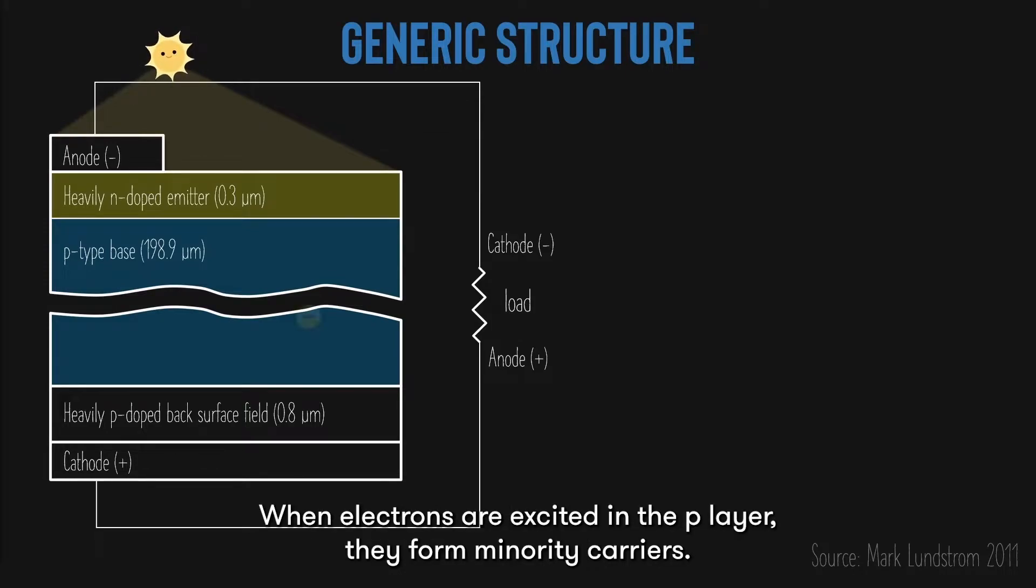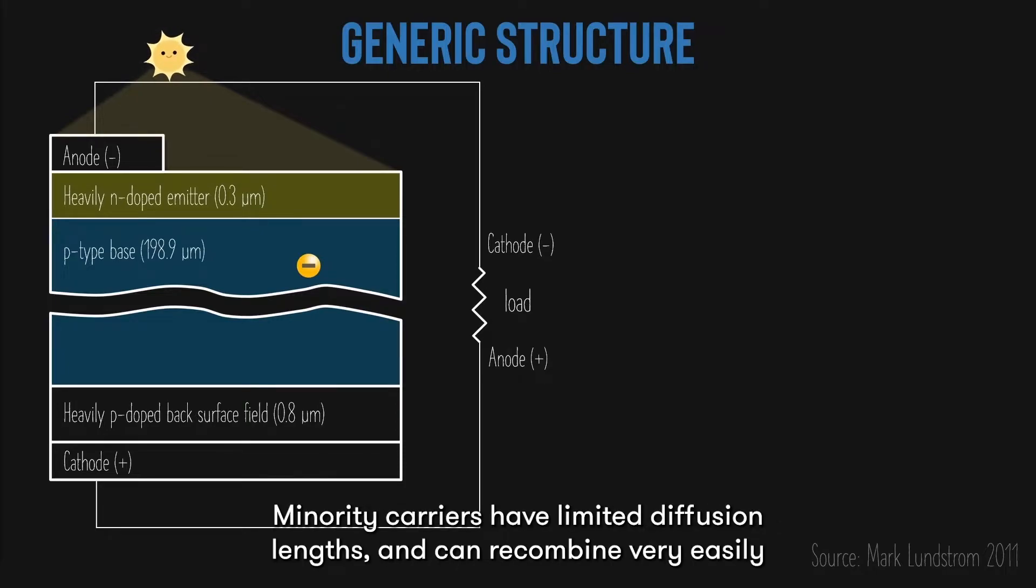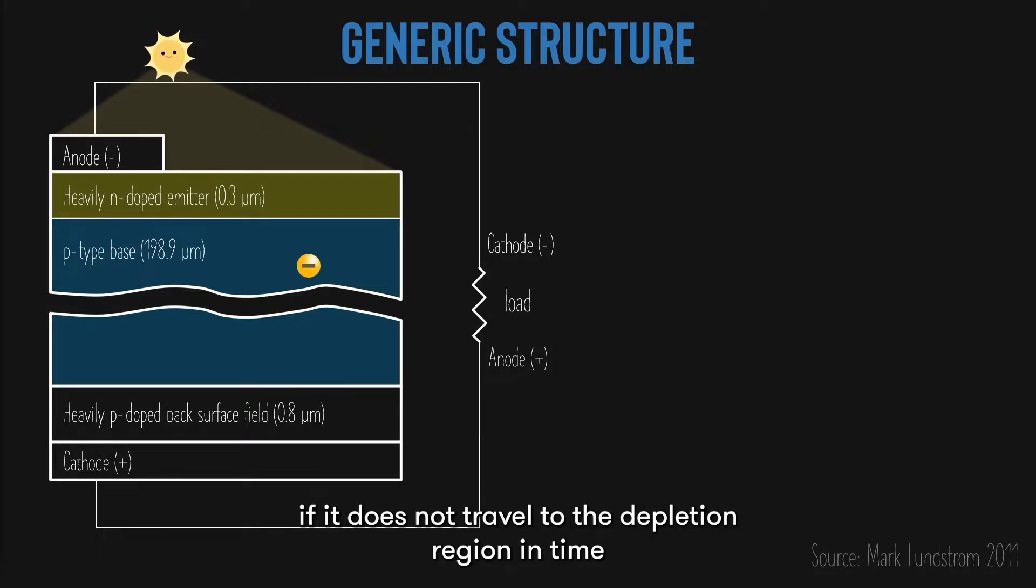When electrons are excited in the P layer, they form minority carriers. Minority carriers have limited diffusion lengths and can recombine very easily if they do not travel to the depletion region in time to be swept out by the electric field. This limited diffusion length can be represented by what's called a minority carrier lifetime.